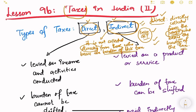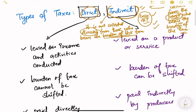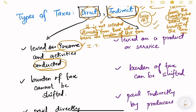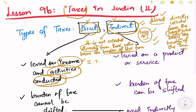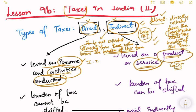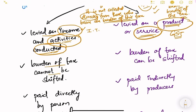Now let's look at some other differences. Direct taxes are levied on income and activities conducted - income tax is an example. Indirect taxes are levied usually on a product or a service; for example, GST is an indirect tax.